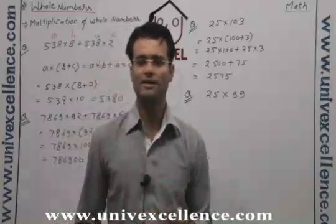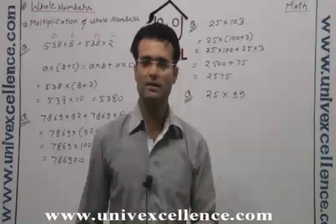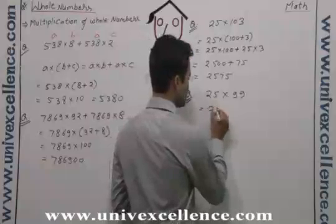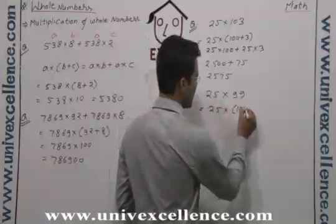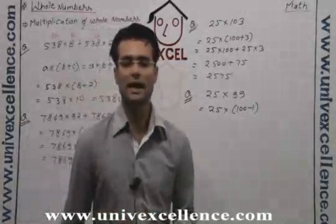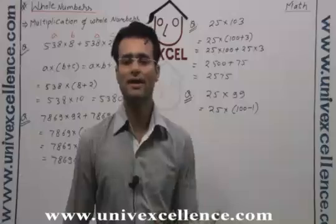It will give you the answer but not easy answer. So what will we do? We will write down 25 into 100 minus 1. This 99 we will write as 100 minus 1.